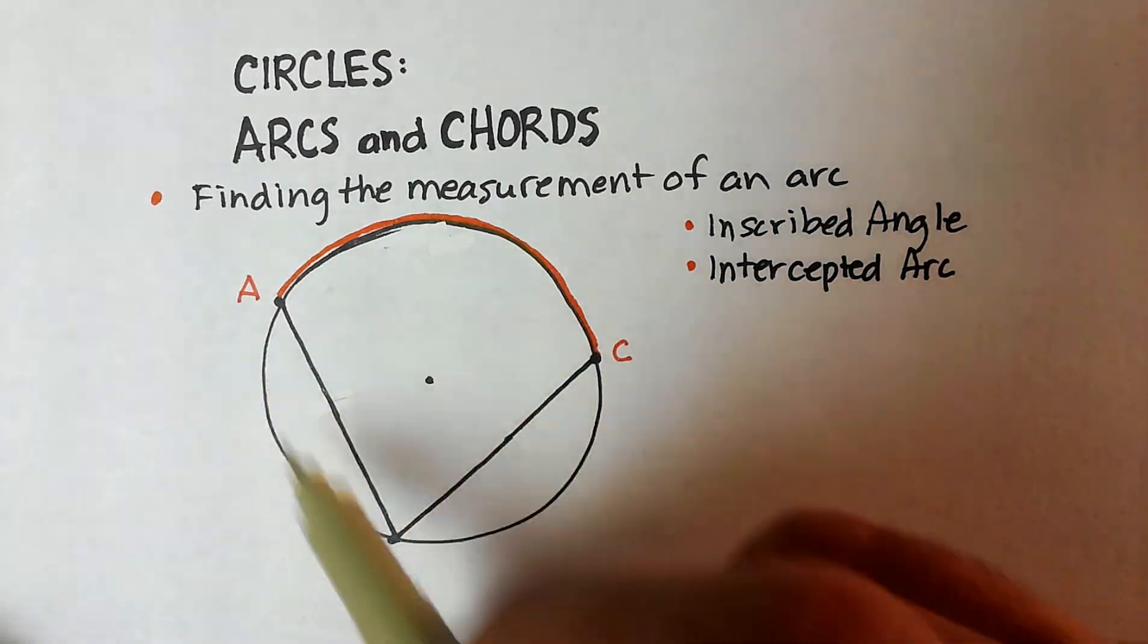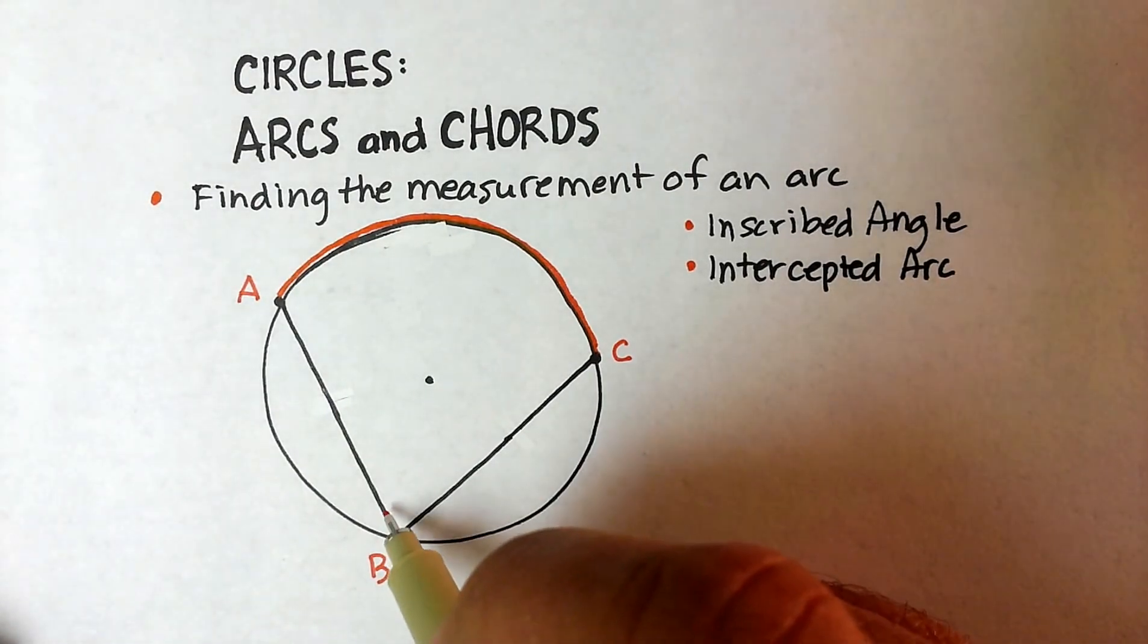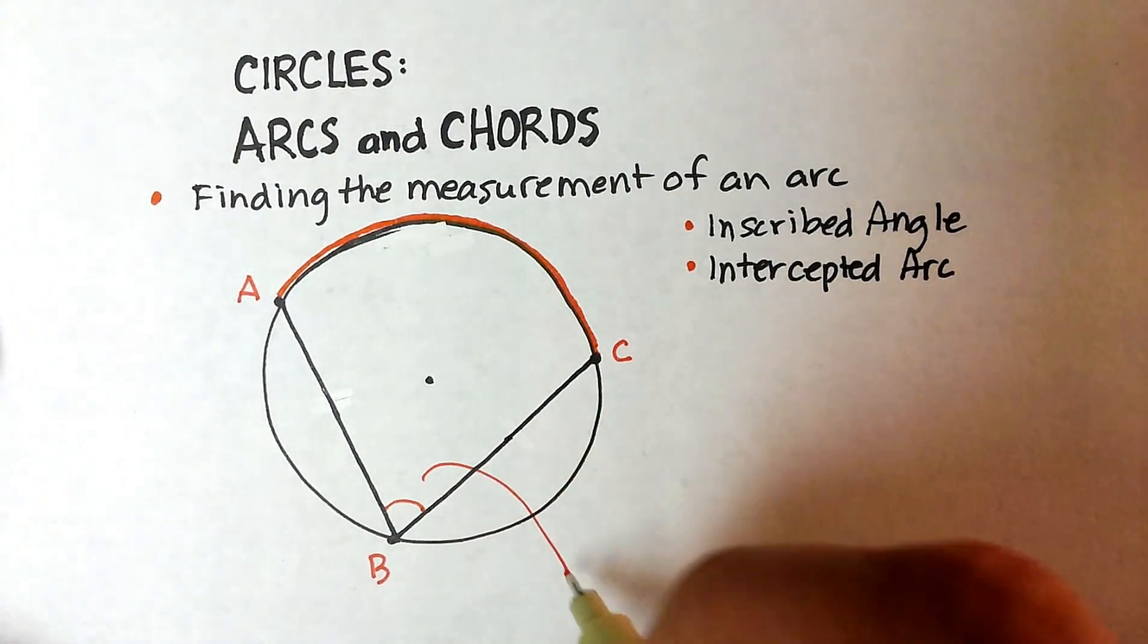And then the rest are not going through the diameter at all. So here we have a chord here, a chord here, and the intersection is right there. So that's called an inscribed angle.